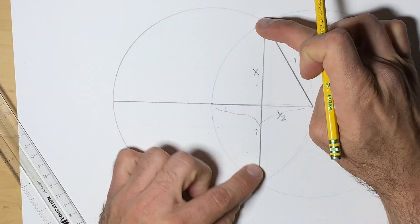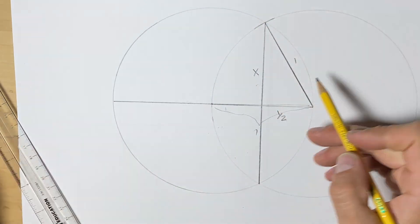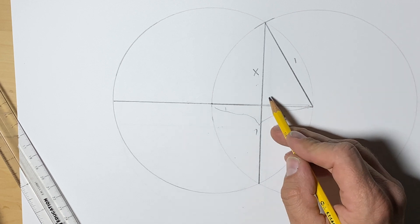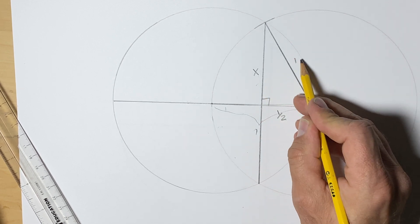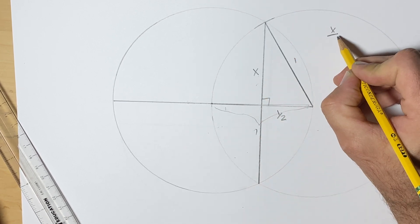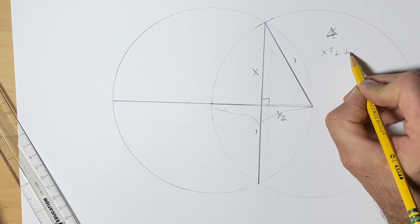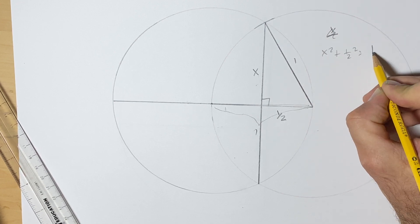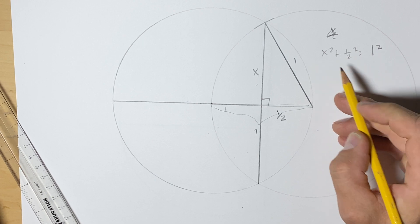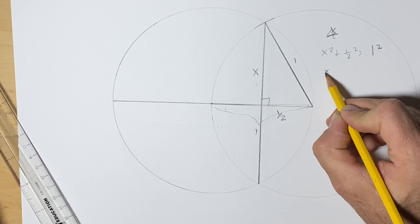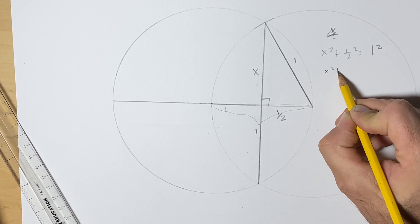Working with the fraction we'll get √3/2. So then this whole amount will be √3. Let's do the Pythagorean theorem. Here's our hypotenuse: x² + (1/2)² = 1².